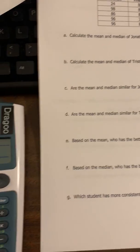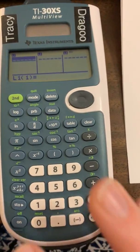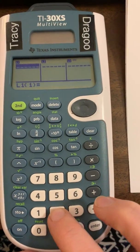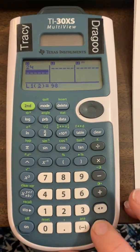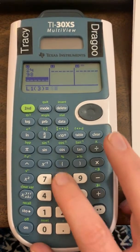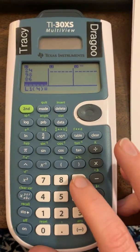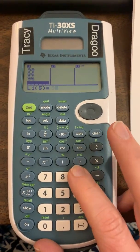So Jonathan will put his in the first column and that is 24, enter, 98, 86, 96, and 96.